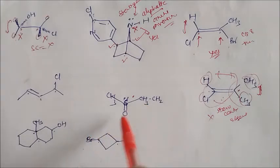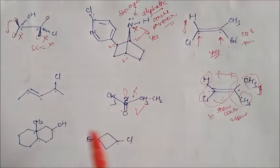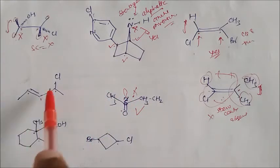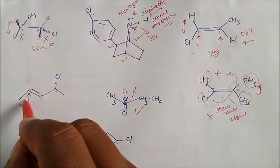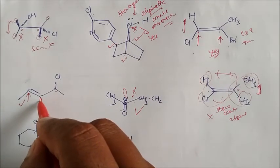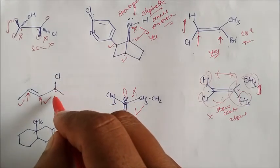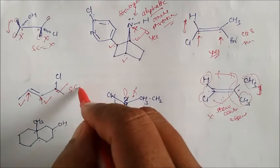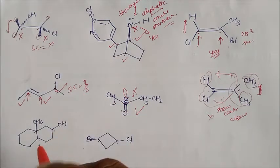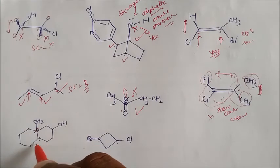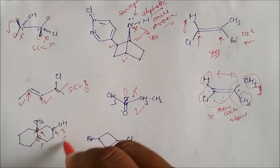Now here — does this have a stereogenic center? Yes. One lone pair is there, and groups one, two, three — so the lone pair means it has a stereogenic center. In this case, it has a stereogenic center. If this carbon has a stereogenic center — yes. If this other carbon has a stereogenic center — again yes. So there are three stereogenic centers in this molecule.